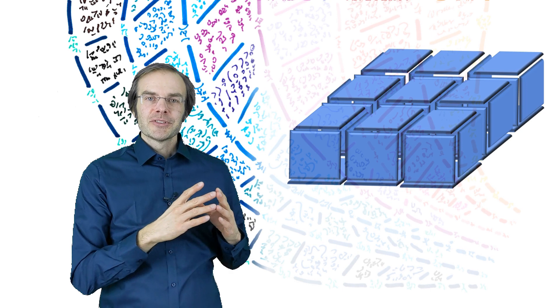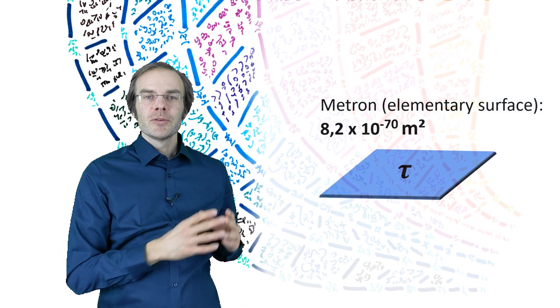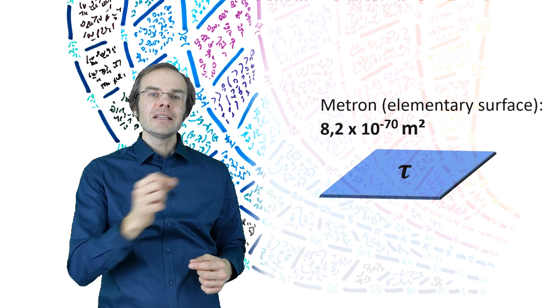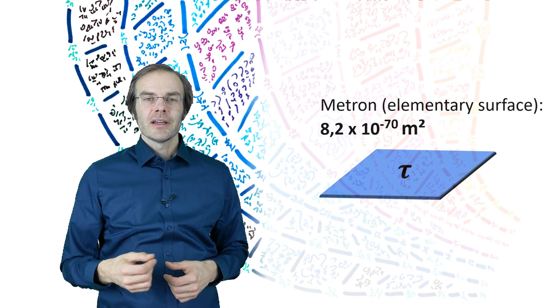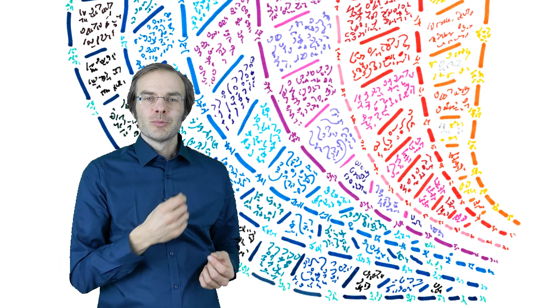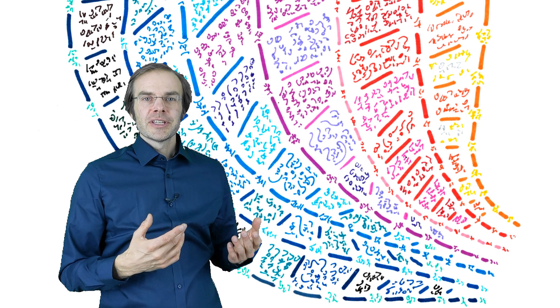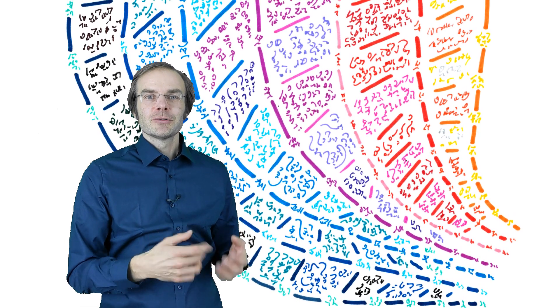Heim called these elementary surfaces the metron. And their surface is 8.2 times 10 to the power of minus 70 square meters. Speaking of length of surfaces, of course, only makes sense for axes one, two and three. But by introducing calibration factors, you can extend this concept of surfaces to the other axes.